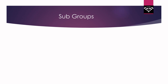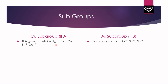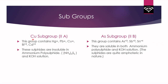Group 2 ions are divided into two subgroups: the copper subgroup (Group 2A) and the arsenic subgroup (Group 2B). The copper subgroup contains Hg2+, Pb2+, Cu2+, Bi3+, and Cd2+. The arsenic subgroup contains As3+, Sb3+, and Sn4+. The key difference: sulfides of the copper subgroup are insoluble in ammonium polysulfide (NH4)2Sx and KOH solution, whereas sulfides of the arsenic subgroup dissolve in both ammonium polysulfide and KOH solution.